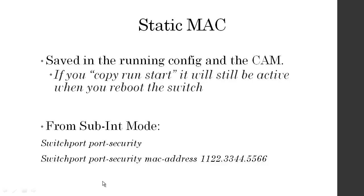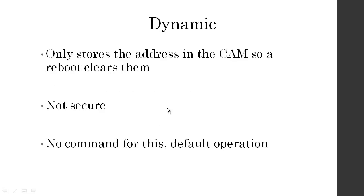Dynamic is the way the CAM normally works — addresses are stored in the CAM and a reboot clears them. They're not stored in the configuration file at all. This is the default operation — any time a PC connects, his MAC address is learned dynamically on the port and forwarded for his traffic. But when you reboot, it gets wiped. There's no specific command for this; it's the default.